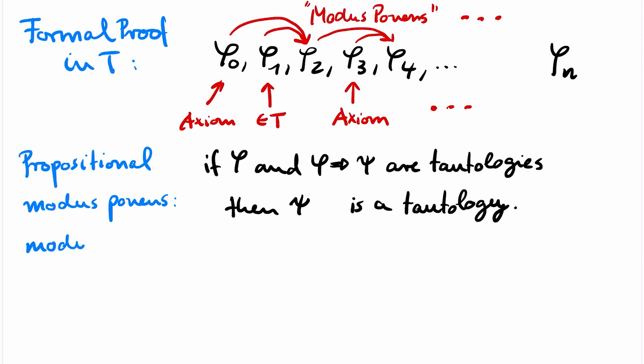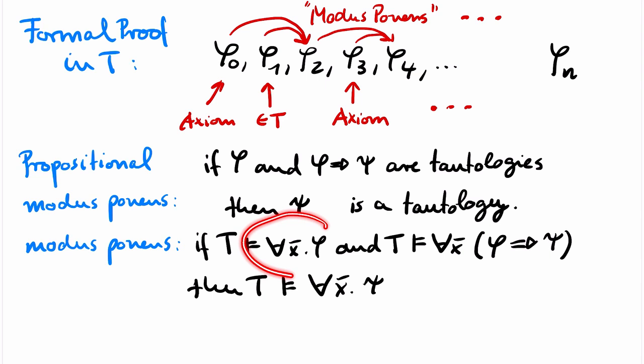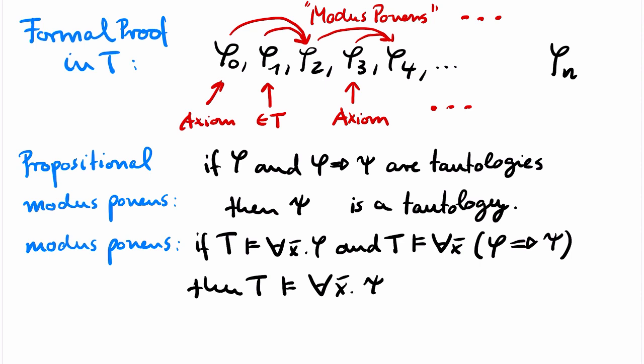There is the following variant of modus ponens for first-order logic. If T implies ∀x φ, and T implies ∀x (φ → ψ), then T implies ∀x ψ. So if φ₀ and φ₁ are sentences in my proof that look as in the assumptions of modus ponens, then φ₂ may look as a sentence in the conclusion of modus ponens.